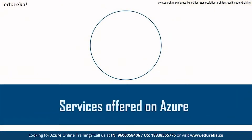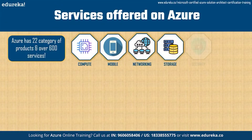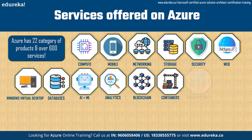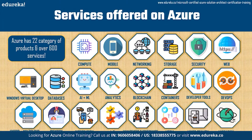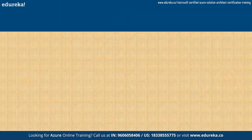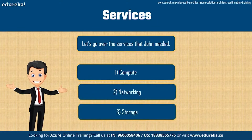Azure has 22 categories of products and over 600 services, so we won't be able to cover all of them here — check Azure's website for the full list and comment with any questions. John specifically needed three services: compute, networking, and storage. Let's take a look at each of these in a bit of detail.